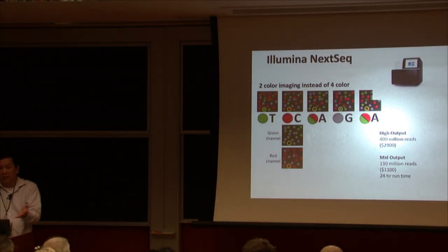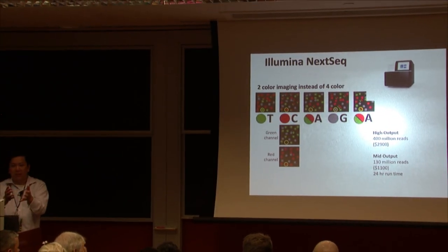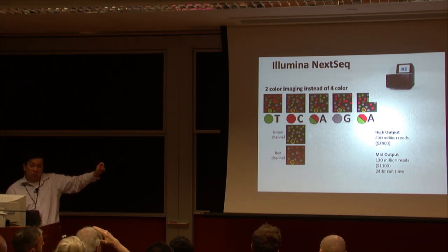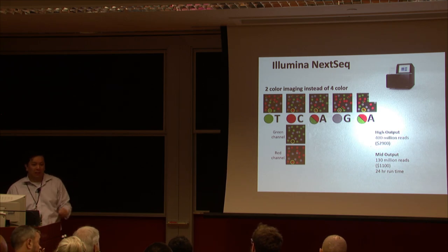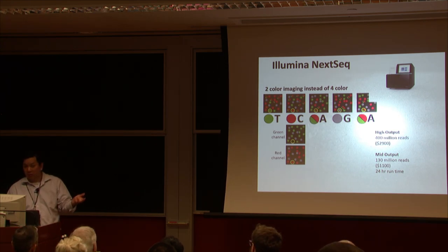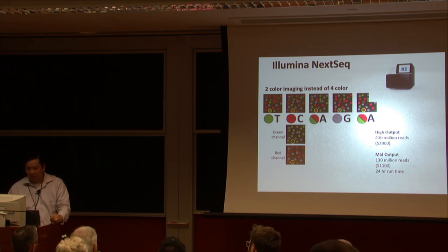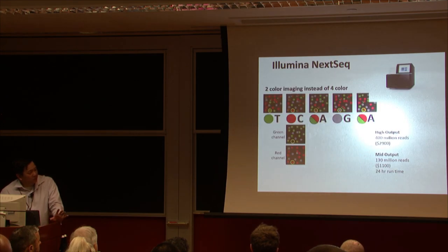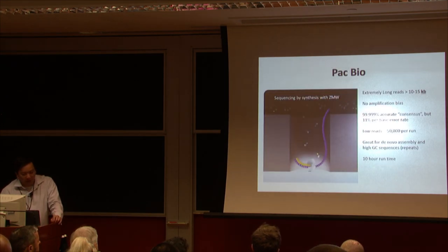There's a known error issue with NextSeq - the error rate is slightly worse than HiSeq. This is something to know because you might think the A, T, C, and G you're getting in your FASTQ files is truth, but in reality there is a per-base error rate. Ben Greenbaum and Raul can comment more on error rates. Those are the main things about the Illumina platform.